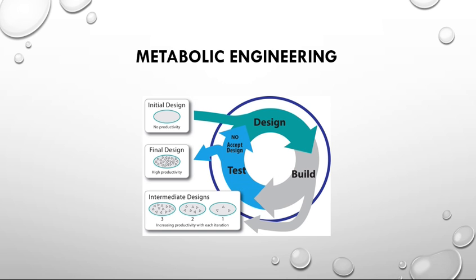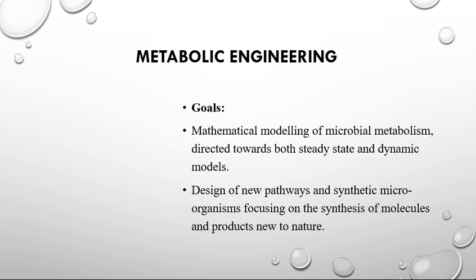Here we can see the initial design — for example, we initially design a pathway where there are no products. Then we build and incorporate either the gene or use any of the above-mentioned processes, then we test for the product. Here we can see that the intermediate design produces: number one produces less, number two produces more, and number three produces more than these two designs. So after the final test we can see that the productivity has actually increased.